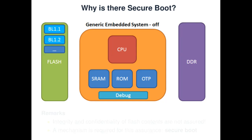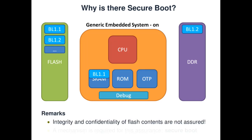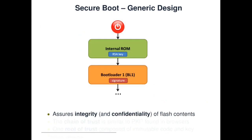Moving on to secure boot — let's say we have a generic embedded system composed of a chip with a CPU, internal memories, a non-volatile flash to house software when the device is off, and DDR volatile storage to execute software during boot. Once powered on, the first stage bootloader BL1.1 is loaded into internal SRAM and executed, setting up the DDR and copying the second stage bootloader into DDR. To make this system secure, we need a mechanism to guarantee the integrity and confidentiality of content stored in external flash — this is referred to as secure boot. Secure boot provides assurance on the integrity and confidentiality of code in external flash, and is typically based on PKI similar to the chain of trust in your browser.